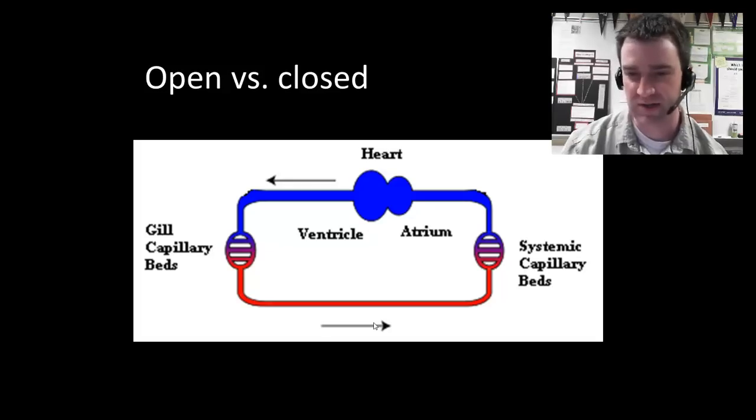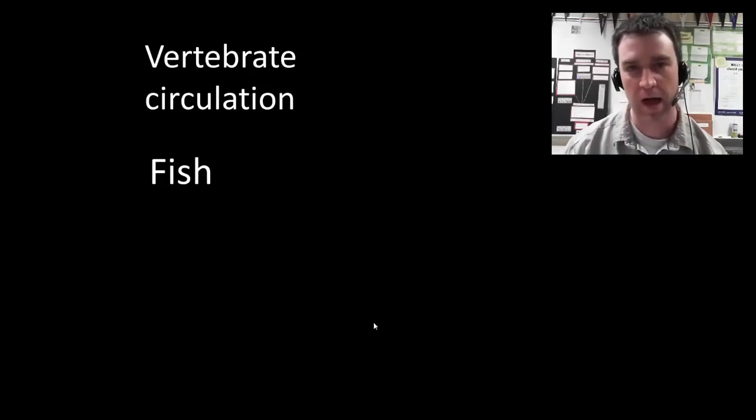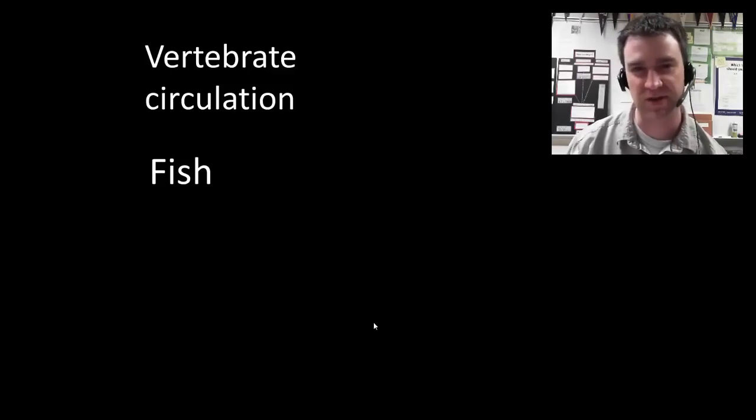So we're going to talk specifically about the vertebrate circulatory system in this video. And I'm interested in just tracing how the vertebrate circulation has changed. We're going to talk about three major groups to think about and how things have changed. We're going to start with the fish circulatory system and how it's set up and how it's fairly basic and maybe a problem with it.